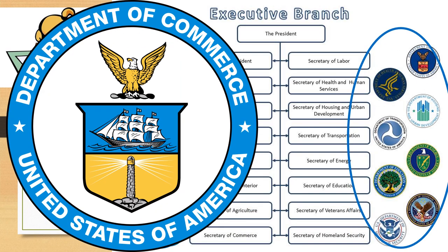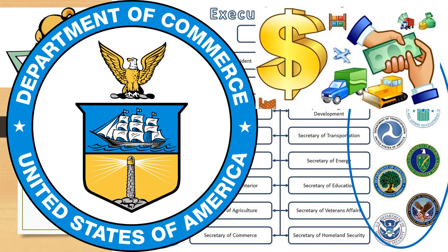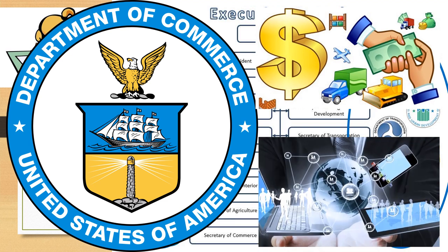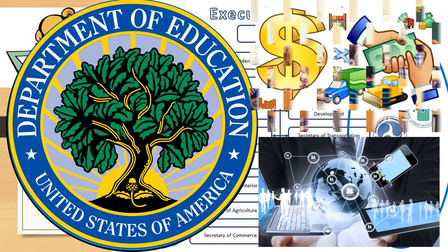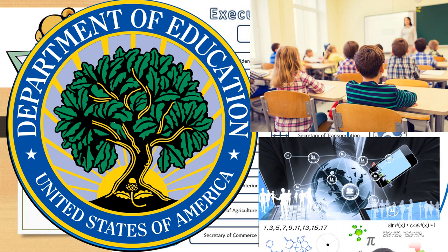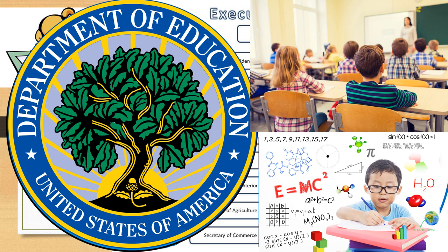The Department of Commerce works on promoting the nation's economy and the buying and selling that happens in the United States. They do this by running programs that help technological innovation, supporting business and industry, and issuing patents and trademarks. The Department of Education promotes national education and works to keep America competitive and to make sure that education is available to everyone. The department works closely with the states to place financial aid and help where needed most.